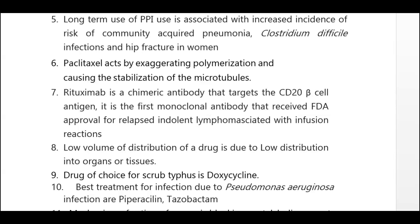Rituximab is a chimeric antibody that targets CD20 B-cell antigen. It is the first monoclonal antibody that received FDA approval for relapsed indolent lymphoma, associated with infusion reactions. Low volume of distribution of a drug is due to low distribution into organs or tissues.